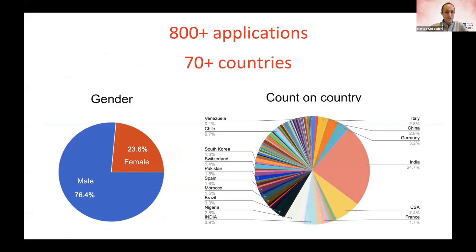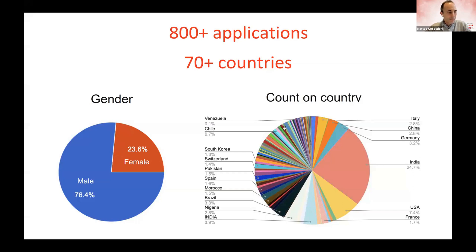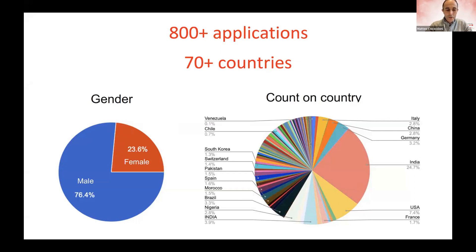Here is some more information about the composition of the attendees of this school. As you can see, we have collected more than 800 applications from more than 70 countries around the world. This slide shows the gender-wise decomposition and a world map of where attendees come from — many many countries are represented. With this I will leave the floor to Yuri Timroff for some other general information about the tutorial and then we can start with today's program.